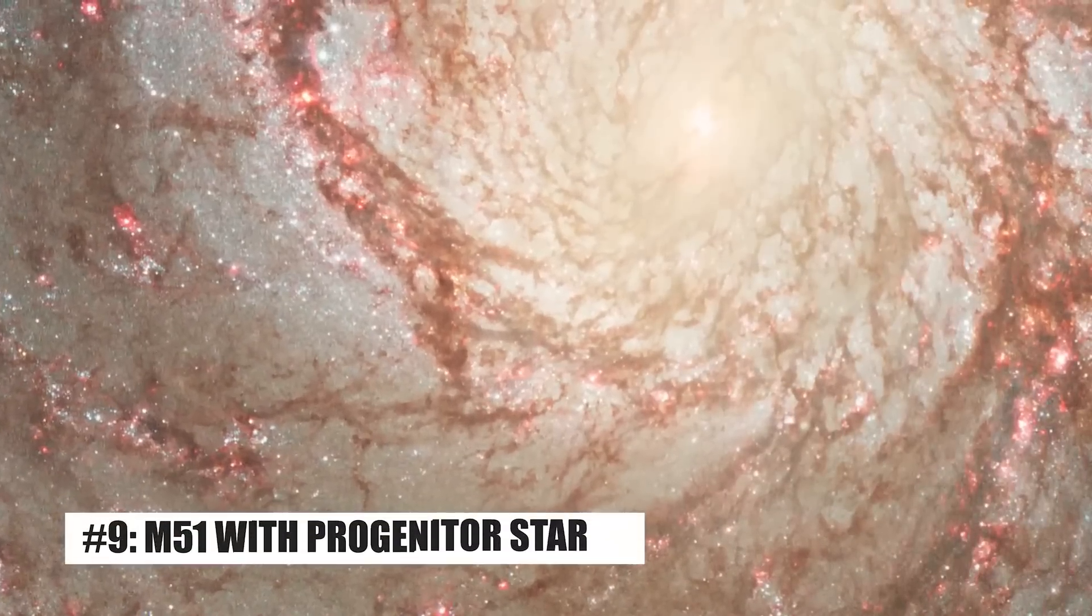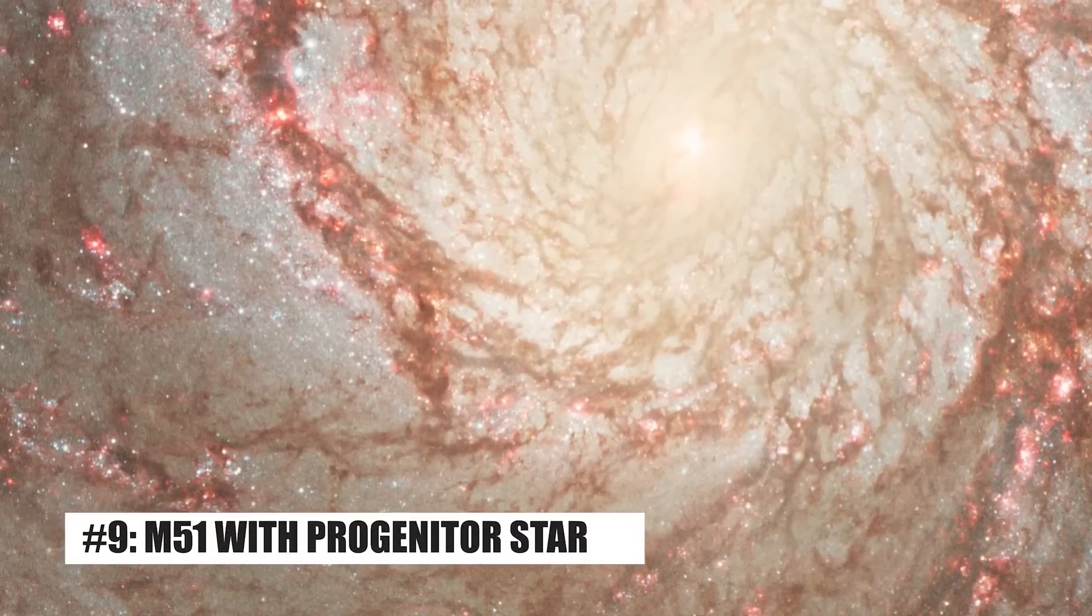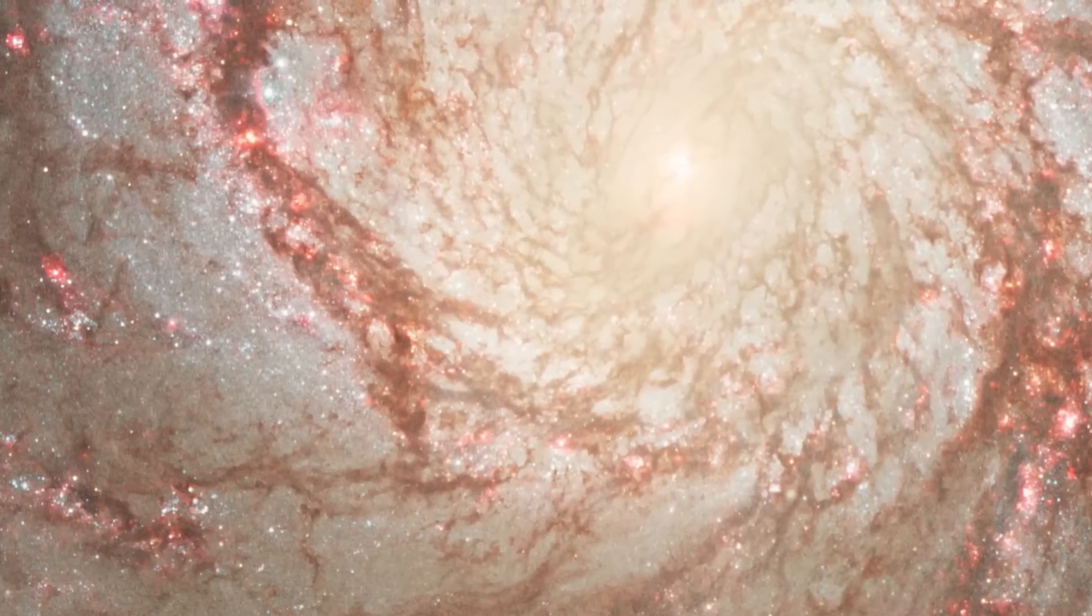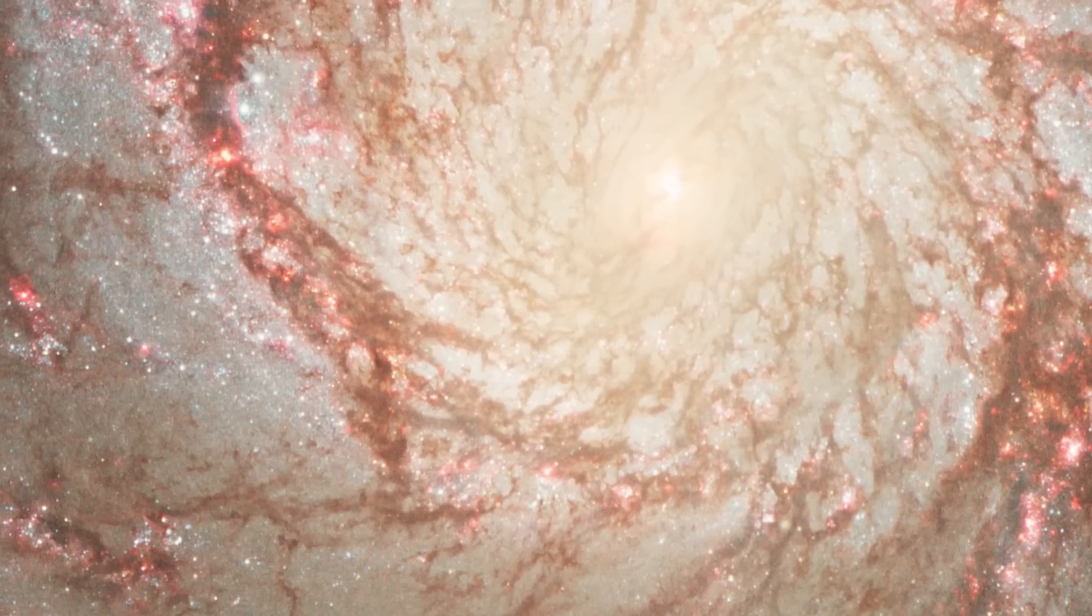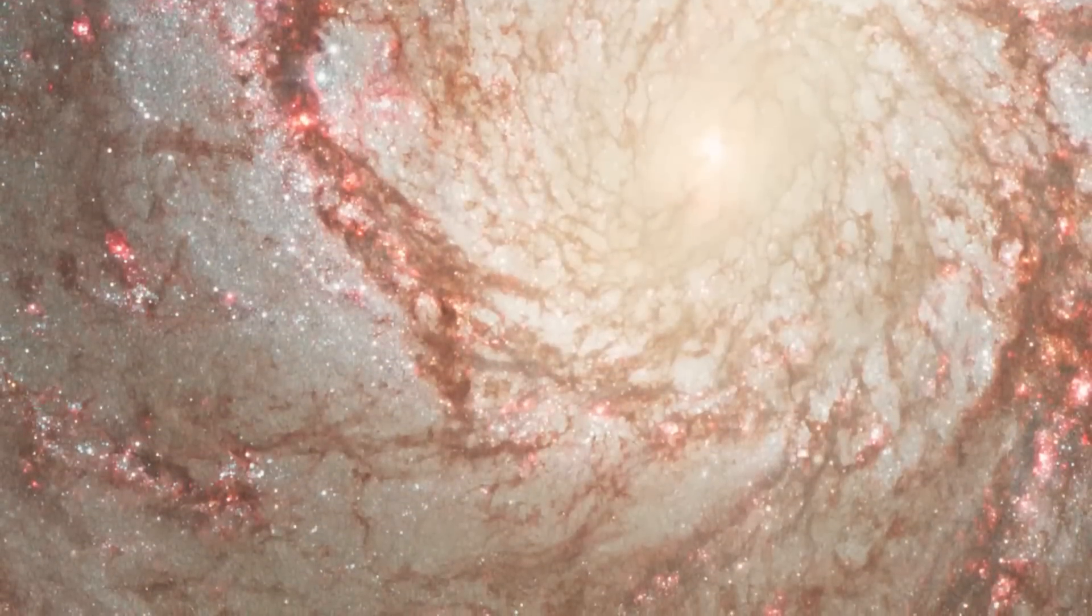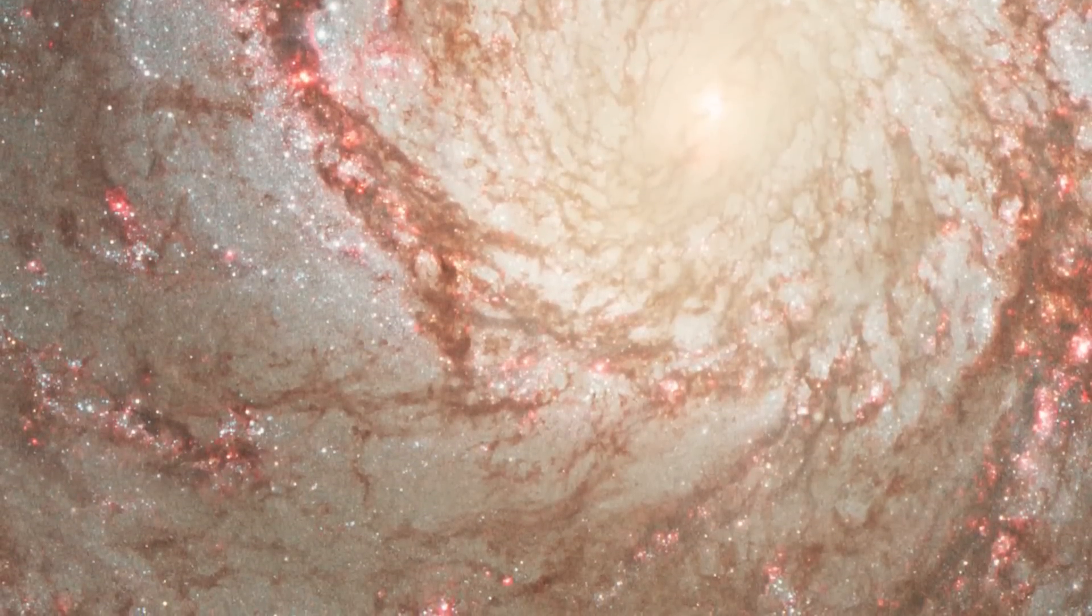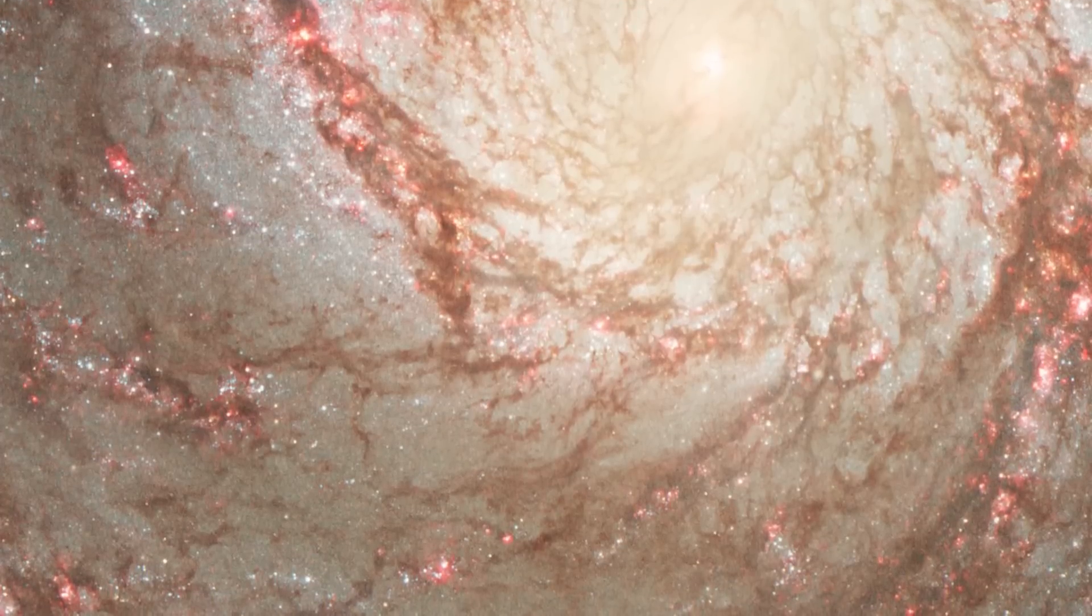Number 9. M51 with Progenitor Star. Imaged by the James Webb Space Telescope, M51 is an interacting spiral galaxy also known as the Whirlpool Galaxy. It's roughly 25 million light-years away from Earth, yet amateur astronomers can see it clearly with a modest telescope.